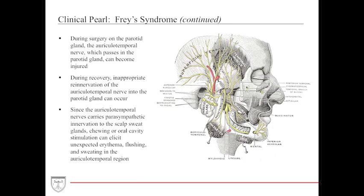One fascinating condition is Frey syndrome. During surgery on the parotid gland, the auriculotemporal nerve — which passes in close proximity — can be transected. Instead of re-innervating its original path, the nerve fibers may get lost and insert into the parotid gland. When this happens, any stimulus to the parotid gland — such as salivation when seeing food — can trigger sensory effects in the auriculotemporal nerve's region: scalp sweating, erythema, and flushing near the auriculotemporal region. It's a fascinating syndrome that is frequently tested, as it results from ectopic re-innervation of the auriculotemporal nerve into the parotid gland.